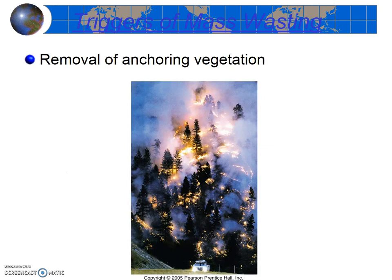Removal of anchoring vegetation is another trigger that we definitely experience here locally. Vegetation does two things. First, the roots are effective at holding soil in place. Second, vegetation takes up a tremendous amount of water. According to the conservation non-profit American Forests, a large mature tree can take up as much as 100 gallons of water per day and release it into the atmosphere. Consider an entire forest. Once the trees are removed, that's a lot of extra water present in the soil, and as noted, water is a major trigger.